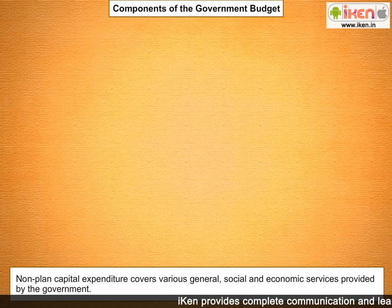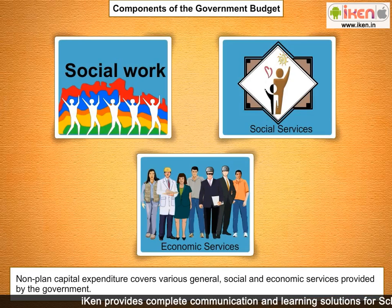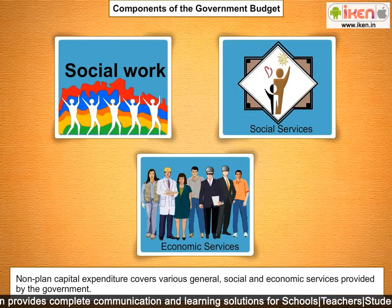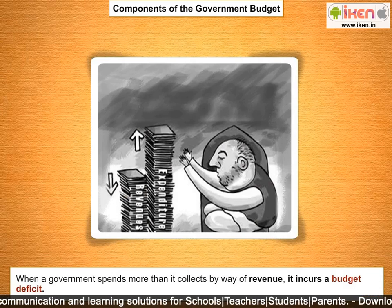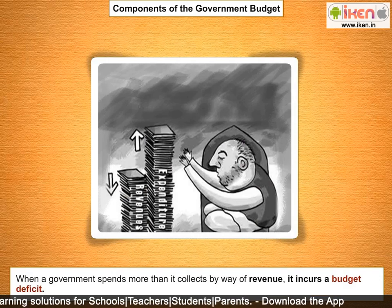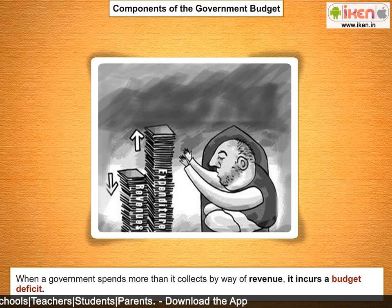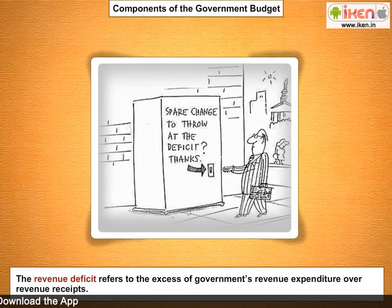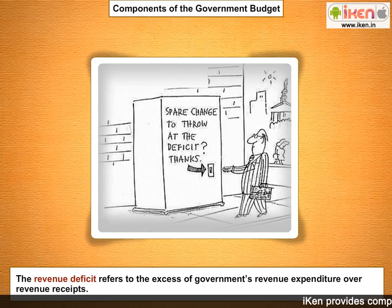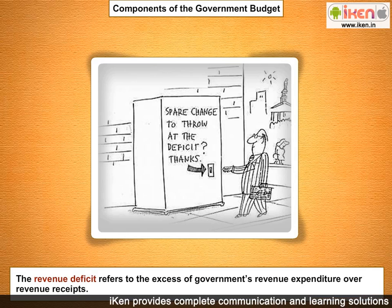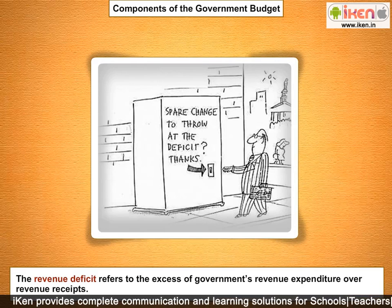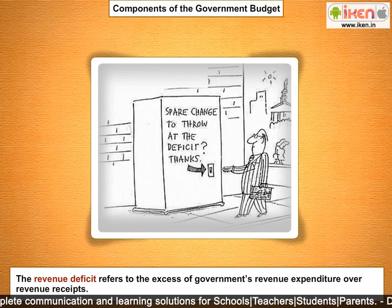Non-planned capital expenditure covers various general, social, and economic services provided by the government. When a government spends more than it collects by way of revenue, it incurs a budget deficit. The revenue deficit refers to the excess of the government's revenue expenditure over revenue receipts, including only transactions that affect current income and expenditure. When the government incurs a revenue deficit, it implies that the government is dissaving and using up the savings of other sectors of the economy to finance part of its consumption expenditure.